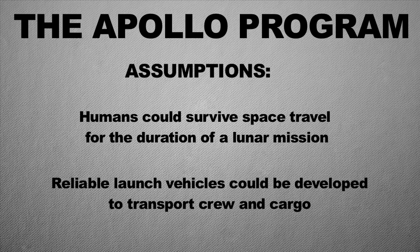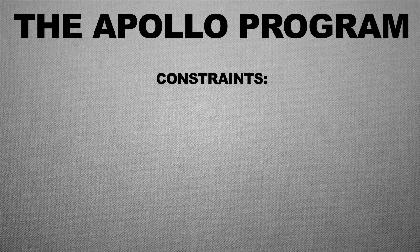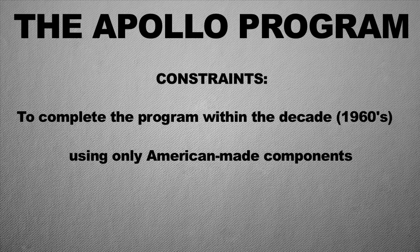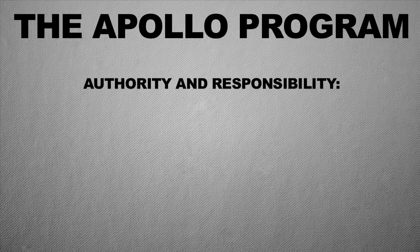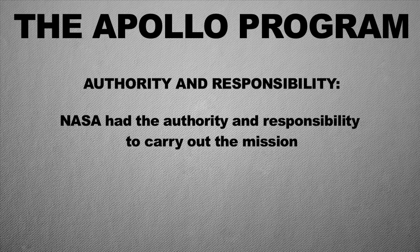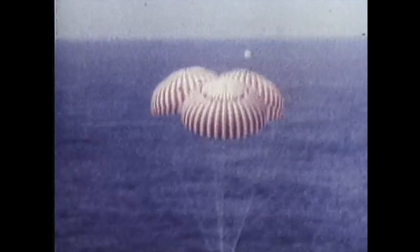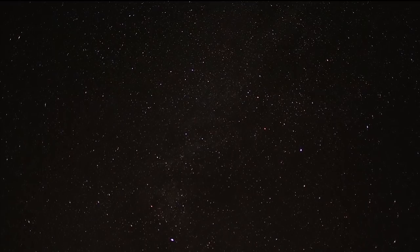Another part of a scoping exercise is developing constraints, so the whole team understands the boundary conditions. For Apollo, one constraint was completing the program within the decade using only American-made components — two constraints the design team had to work within. The President asked for it to be done by end of decade, and government rules required everything to be made in America. For authority and responsibility, NASA was given authority by the President and by Congress to execute the mission, then developed roles and responsibilities for each NASA center to pull the parts together and design the individual pieces to make the mission happen.